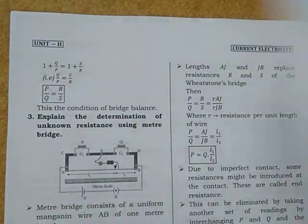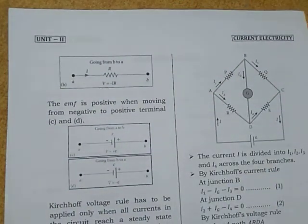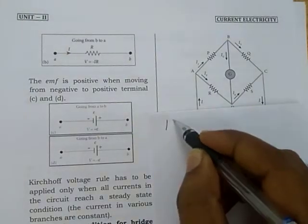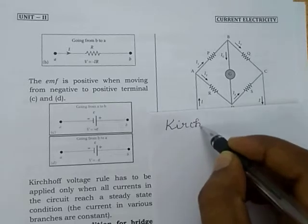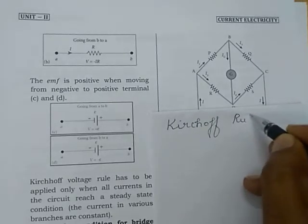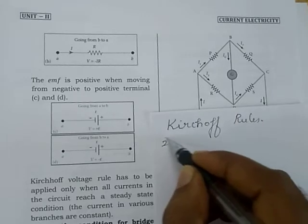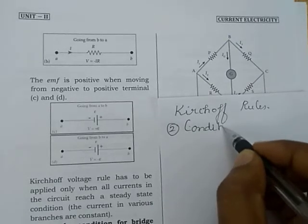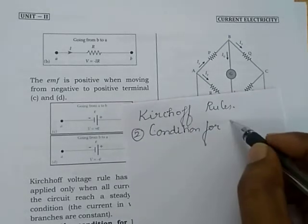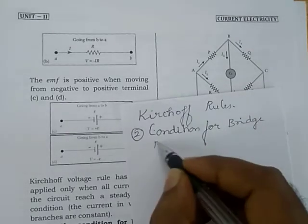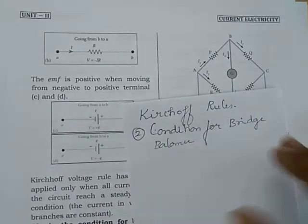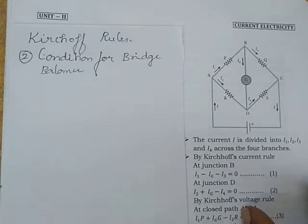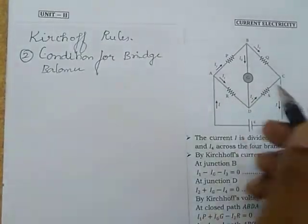To answer this question on Kirchhoff's Rules — question number 2, condition for bridge balance — we first need to know the bridge balance circuit. This is the Wheatstone bridge, consisting of 4 resistors P, Q, R, S.